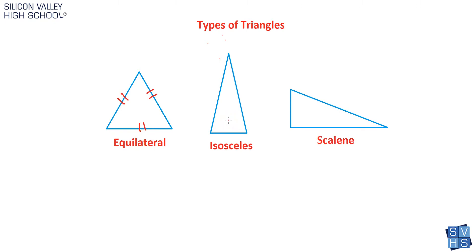Isosceles is a triangle where two sides are congruent and not the third. The tick marks show which two sides match, and the unmarked side is different. So isosceles has exactly two sides that are the same. Scalene triangles are triangles in which no sides are the same. A scalene triangle has no markings, and you can tell the sides are different lengths. You have to be careful — every triangle is basically scalene unless you're told otherwise. If there are no tick marks, you cannot make any assumptions about which sides are congruent.